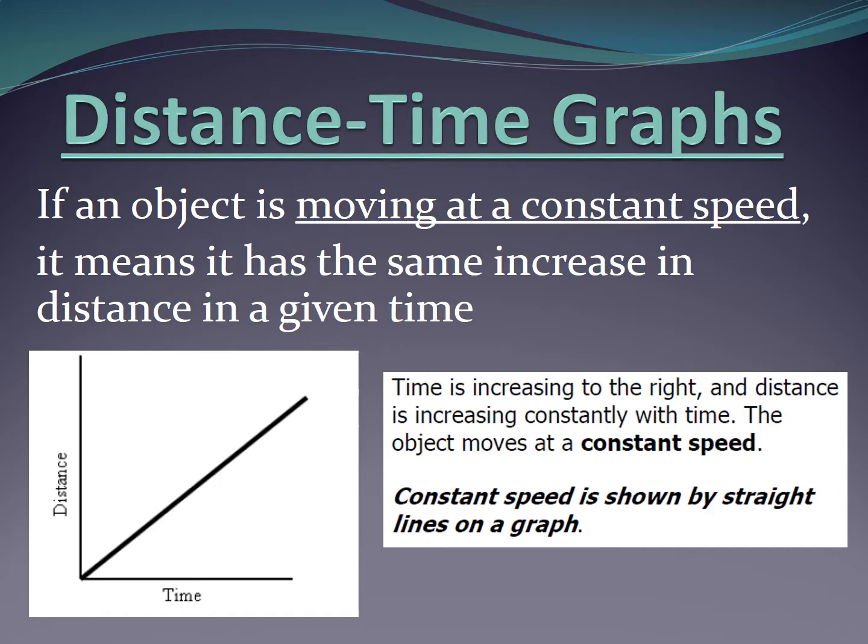If an object is moving at a constant speed, it means that it has the same increase in distance at a given time. So for example, let's make up some data here to interpret this graph.